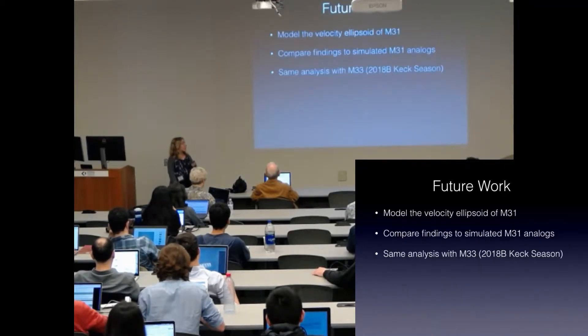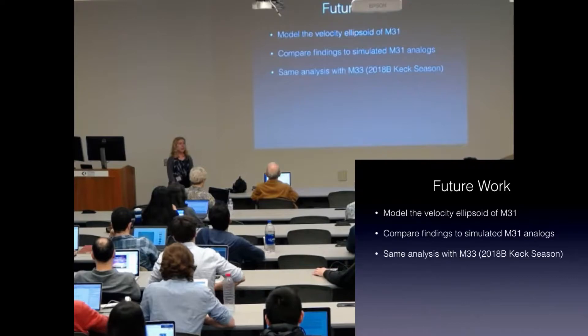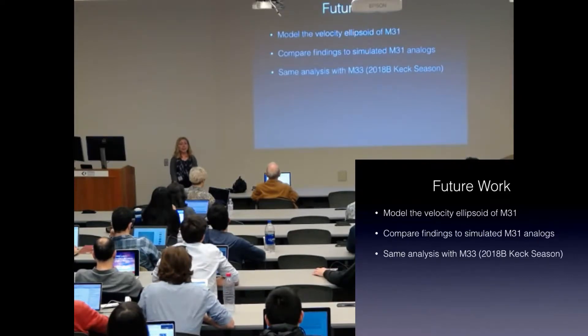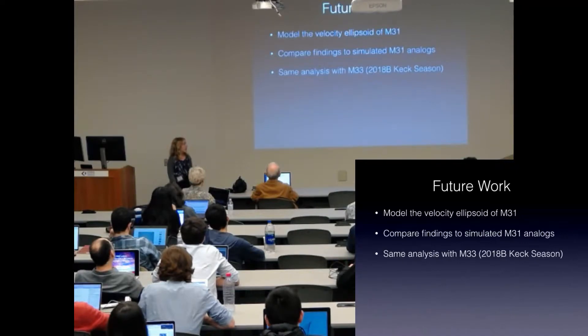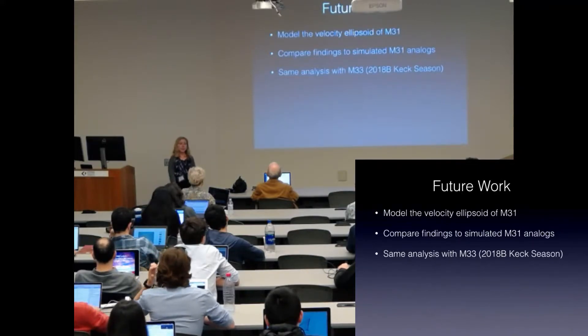This project has some logical next steps. First, to measure the shape of the velocity ellipsoid in M31. Emily did a really great job motivating why this is important, and I hope to be able to contribute to this work in M31. I've also started to analyze simulated M31 analogs from the Illustris simulation. The M31 analogs that have recently had a major merger can reproduce the trend of increasing asymmetric drift with stellar age.